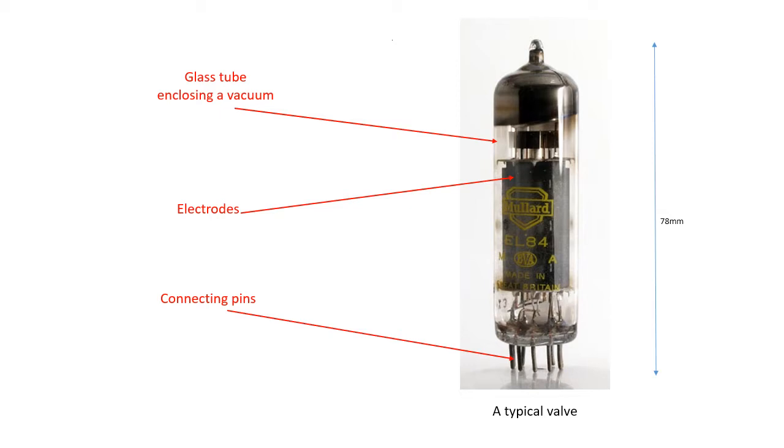This picture shows a typical valve consisting of a glass tube enclosing a vacuum, the electrodes within the glass tube, and the pins that are used to connect the circuit that uses the valve.